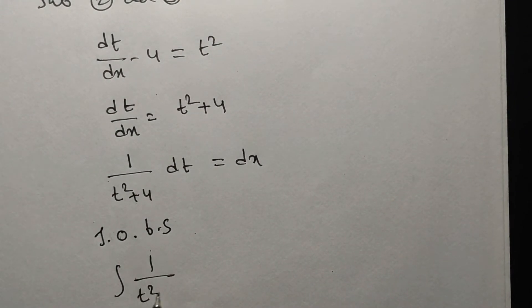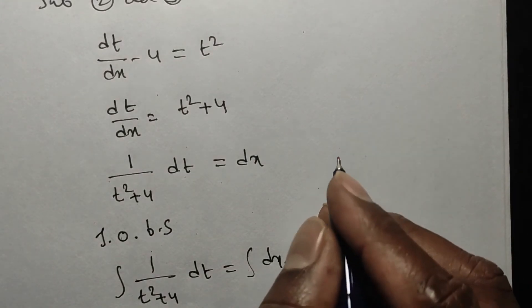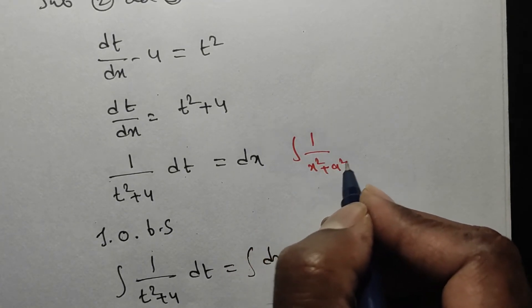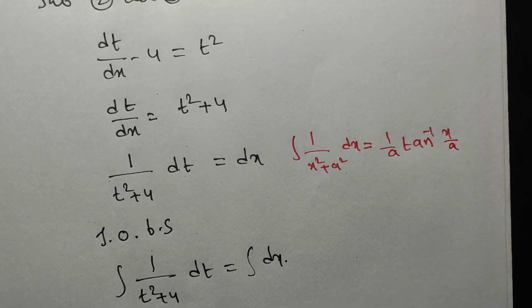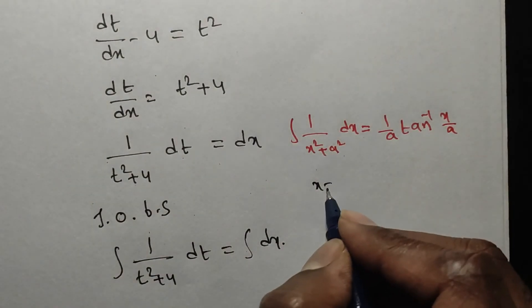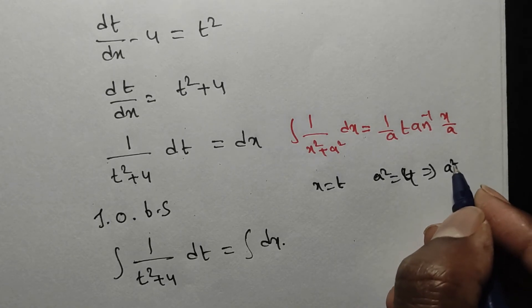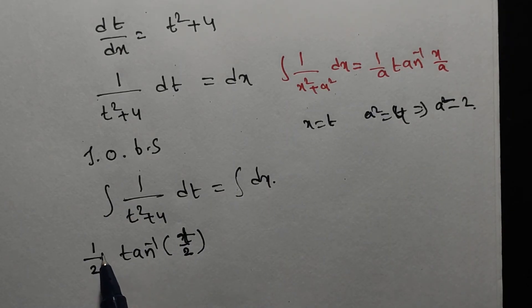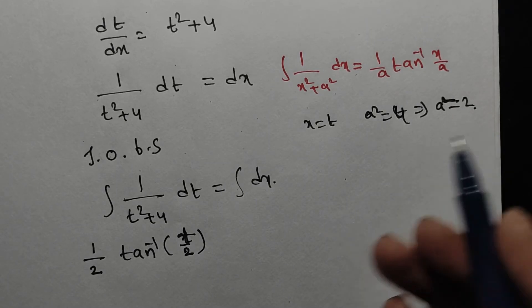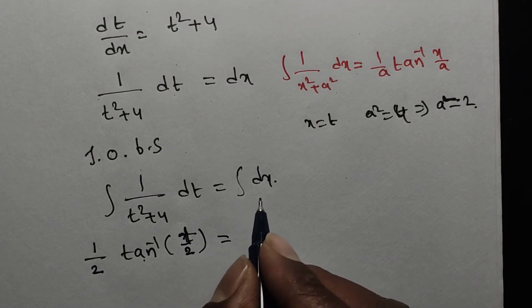Integrating both sides: ∫ (1 / (t² + 4)) dt = ∫ dx. We use the formula ∫ (1 / (x² + a²)) dx = (1/a) tan⁻¹(x/a). Here a² = 4, so a = 2. Substituting, we get (1/2) tan⁻¹(t/2) = x + c, where c is an arbitrary constant.